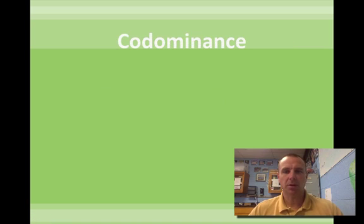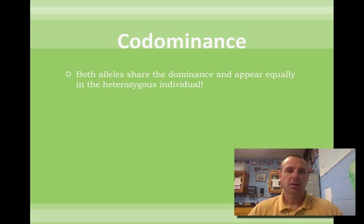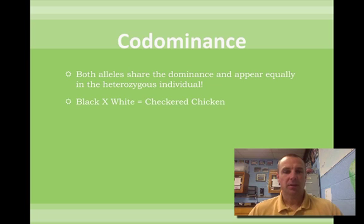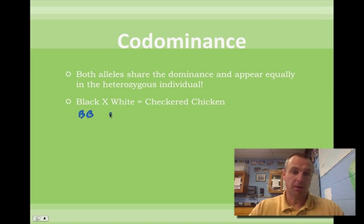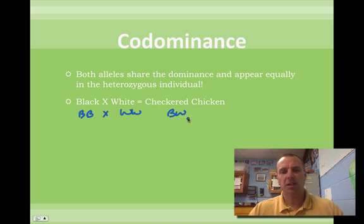The next one is co-dominance. Co-dominance means that both alleles are equally dominant. So you have an appearance in the heterozygote that shows both traits. For example, if you have a black individual — which would be BB since both are dominant — crossed with a white individual (WW), the checkered chicken offspring would be BW. The checkered chicken has equal numbers of white and black feathers.